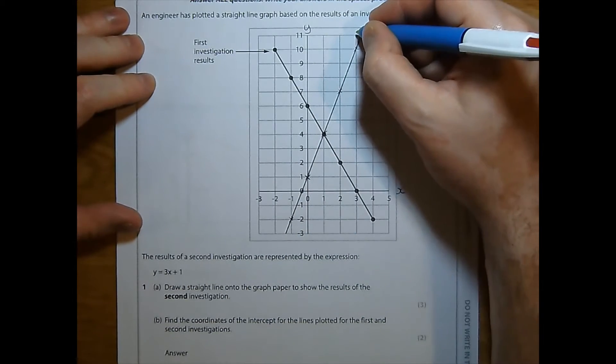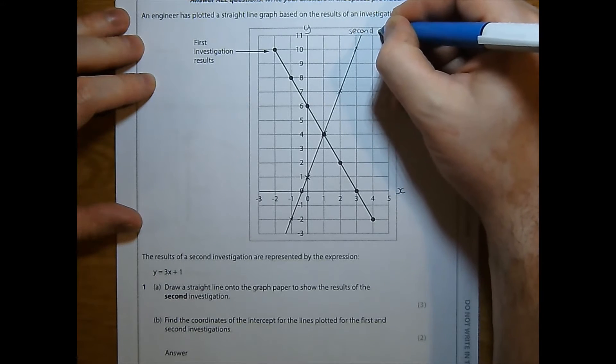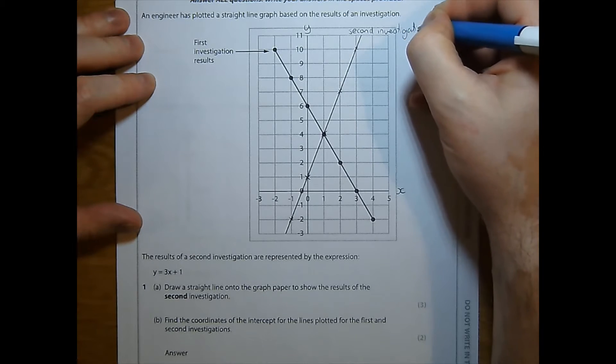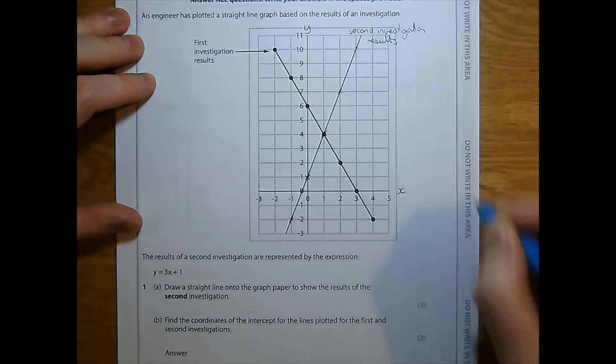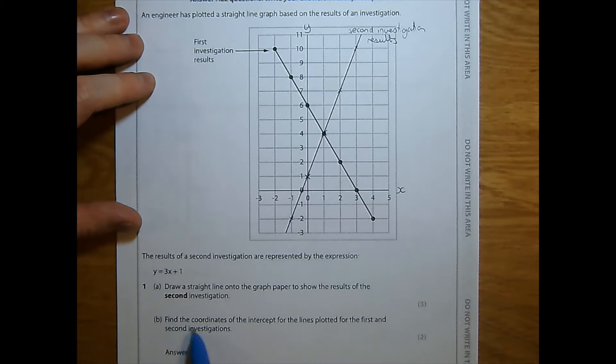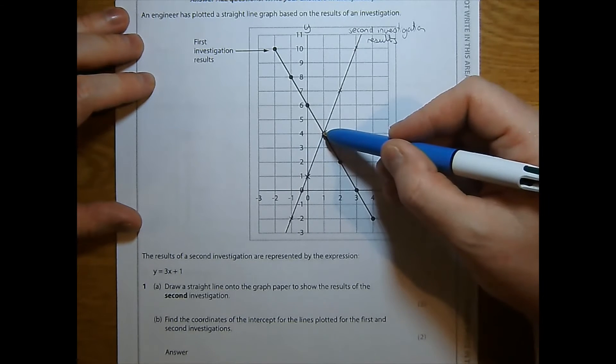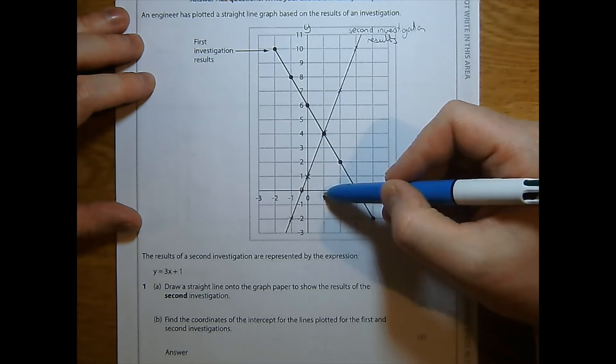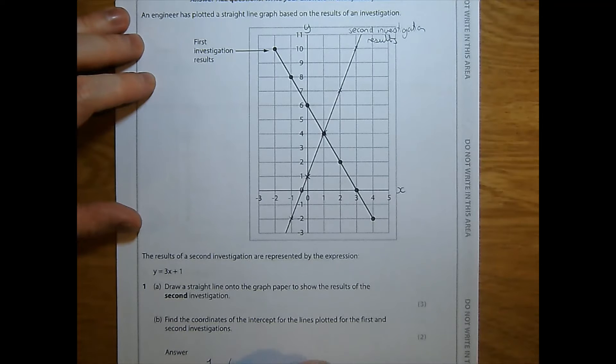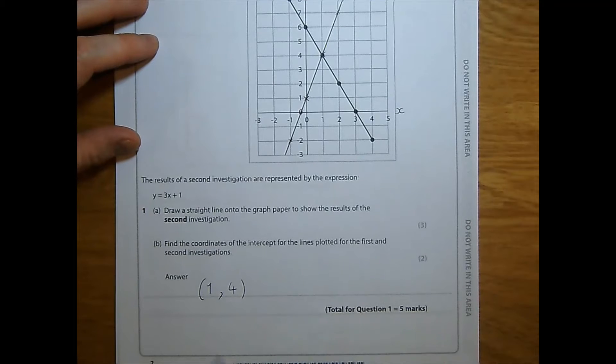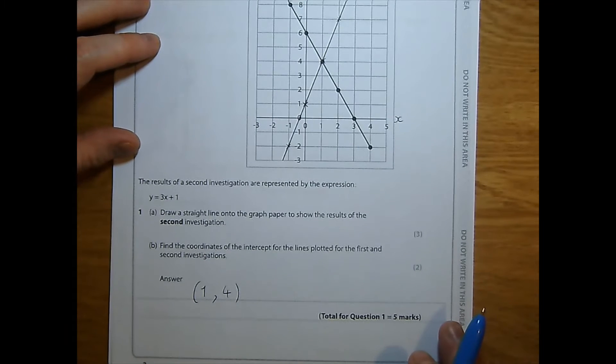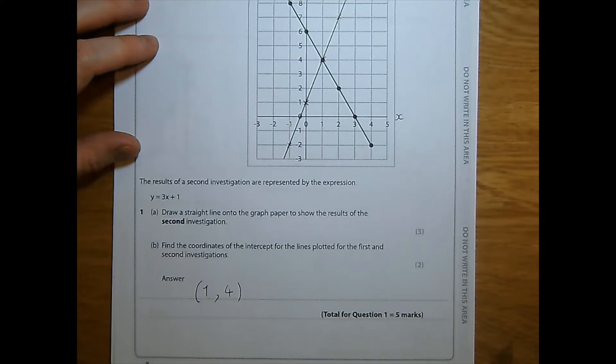I'm going to label this as second investigation. I've done everything they've asked of me. Let's continue to part B. Find the coordinates of the intercept for the lines plotted for the first and second investigation. This is where the two lines intercept each other, which is here, where they cross. The coordinates are going to be 1 and 4. Coordinates are shown with a comma in between, brackets either side, x first and then y. That is question 1.